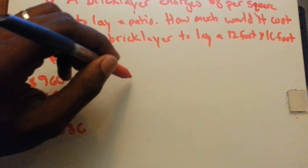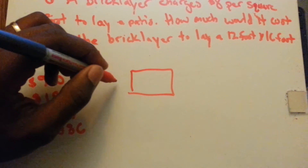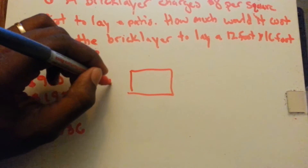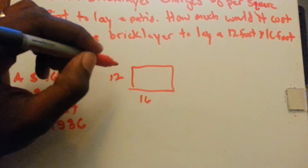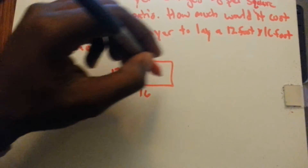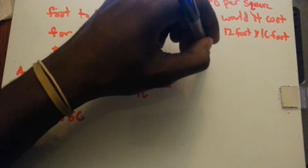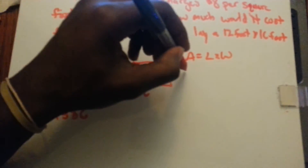So we have a space that is 12 foot by 16 foot. So find the area. Area equals length times width. The area here is 16 by 12.